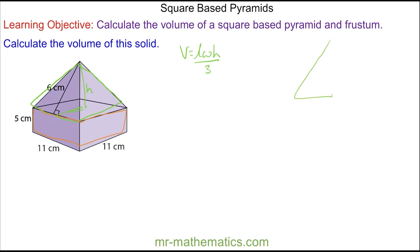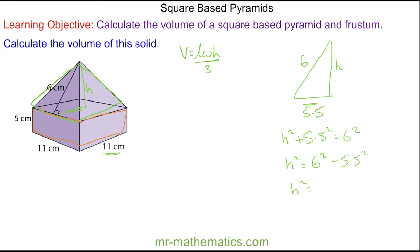We have a right angle triangle where we're trying to find the height; the slanted length is six and the base length is half of eleven, which is 5.5. So h squared plus 5.5 squared equals six squared, meaning h squared equals six squared minus 5.5 squared, so h squared equals 5.75. Taking the square root of both sides, the perpendicular height is approximately 2.4 centimeters.